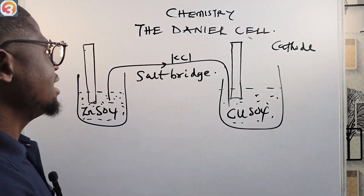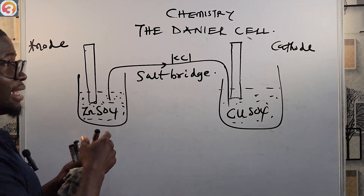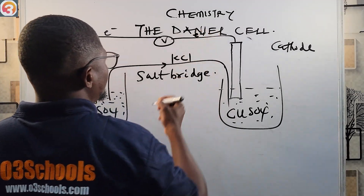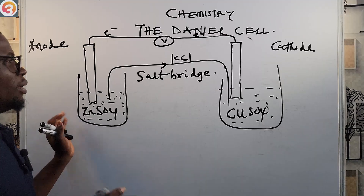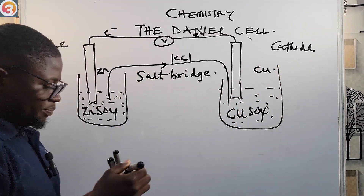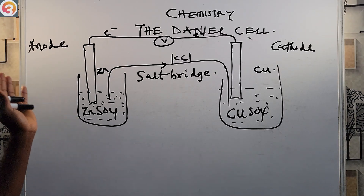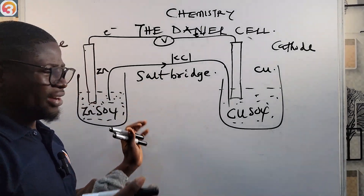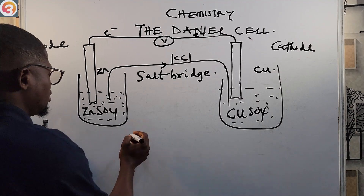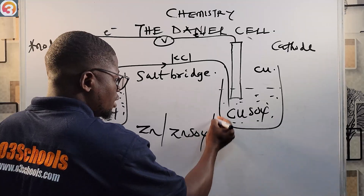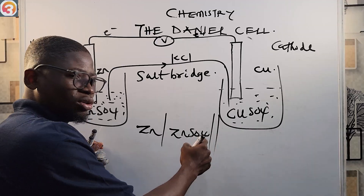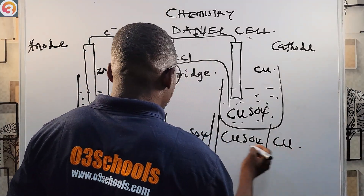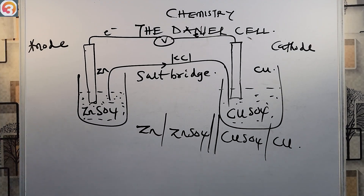A voltmeter is connected across the two electrodes — negative on one side, positive on the other. This is our simple Daniel cell made up of a copper vessel and a zinc vessel immersed in CuSO₄ and ZnSO₄ respectively. The cell notation shows: Zn | ZnSO₄ || CuSO₄ | Cu — note that the double slash symbol represents the salt bridge, and this symbol has come out in past questions.